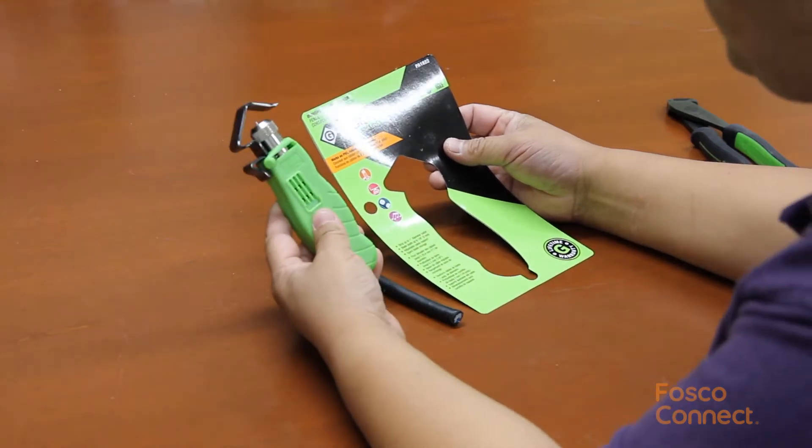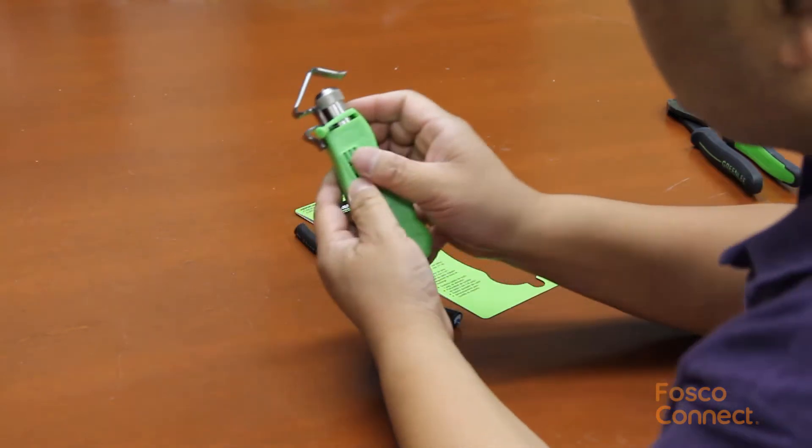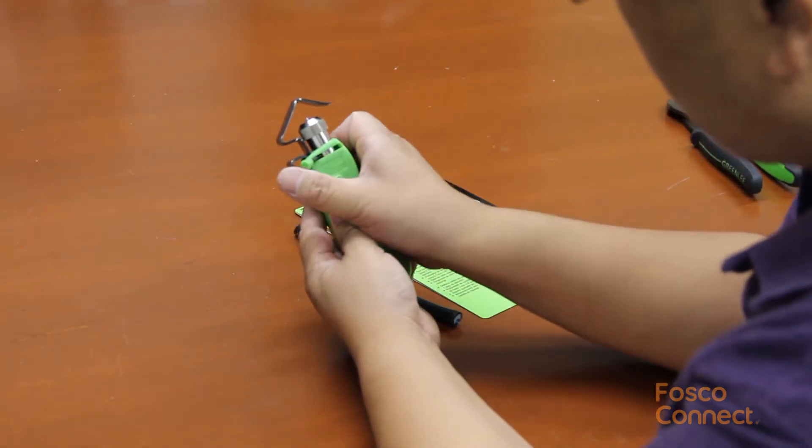This is the Greenlee PA1822 Universal Cable Slitter. It can slit cable for ring cut and longitudinal cut.